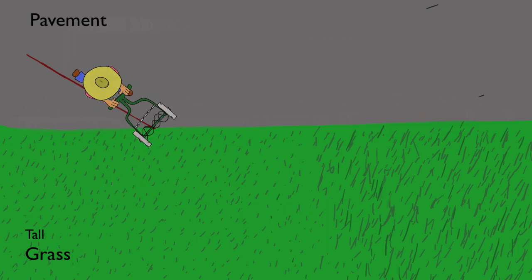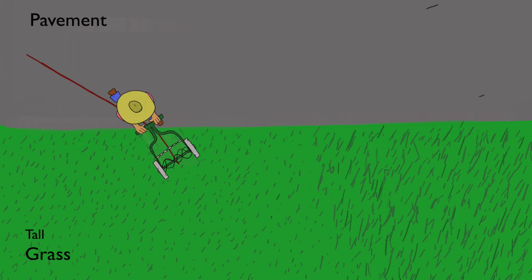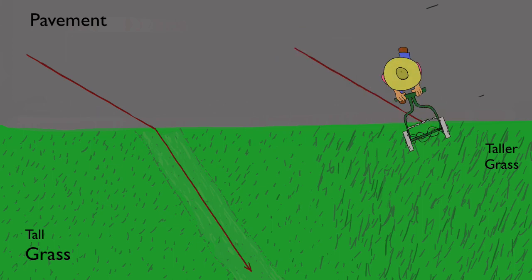While this happens, the side of the lawnmower still on the pavement keeps moving at the same speed. The result is that the lawnmower pivots into the grass. And of course, the taller the grass, the more the pivot.